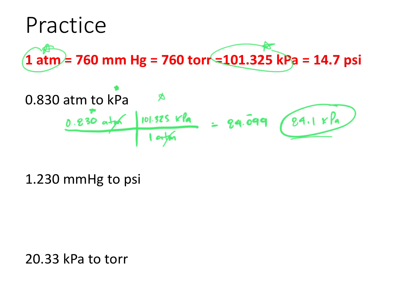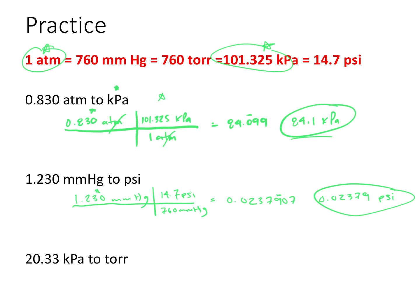Next, we have 1.230 millimeters of mercury to convert to psi. The relationship is 14.7 psi for every 760 millimeters of mercury. Plugging that in gives 0.023790. We have four significant figures in 1.230, so our final answer is 0.02379 psi.